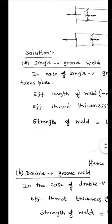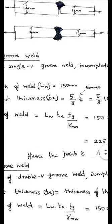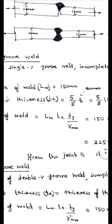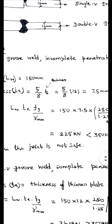Next we will calculate the strength of the weld. Strength of the weld equal to area of the weld into weld stress. So here area of the weld is length into throat thickness. Length is directly given as 150 mm, throat thickness is worked out as 7.5 mm.